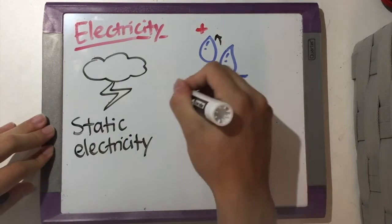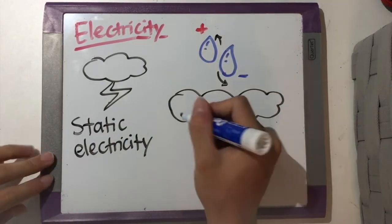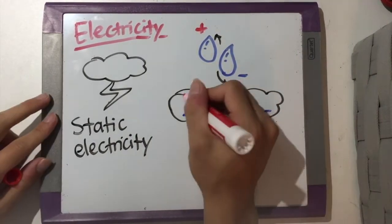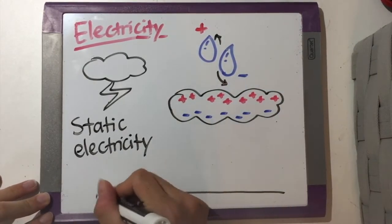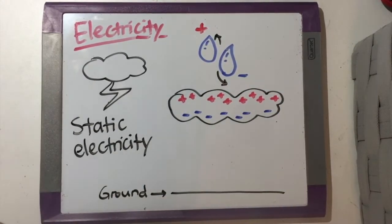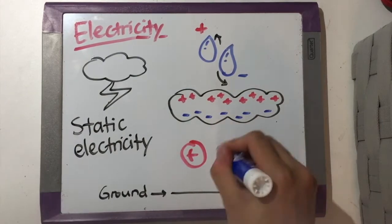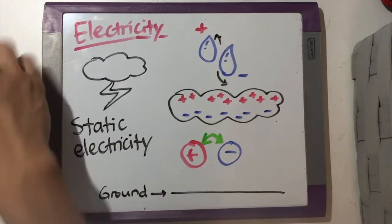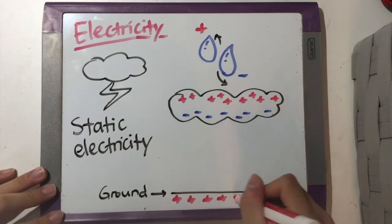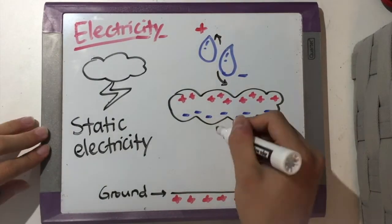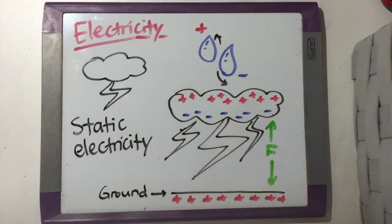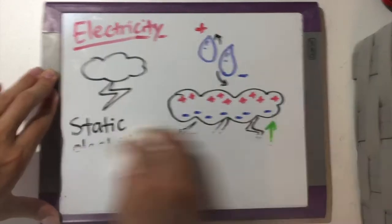Then, the negatively charged particles sink to the base of the cloud as they are heavier, and the positively charged particles rise to the top. Going back to the concept of opposites attract, the negatively charged water droplets will attract the positive charges back on the ground. When the attraction force between the water droplets and the ground is strong enough, lightning, which is a very strong electric force, will be unleashed.